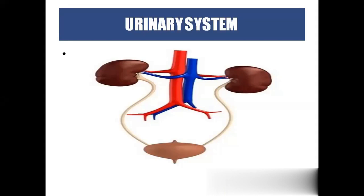Coming to the next topic about the urinary system. In this picture you can see the kidneys — two kidneys located backside of the abdomen. We usually call this retroperitoneal: retro means behind, peritoneal refers to behind that peritoneal layer. From the descending aorta we get a branch called the renal artery, and we have the renal vein, ureter, urinary bladder, and urethra. These are the main parts of the urinary system.